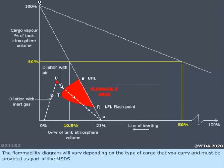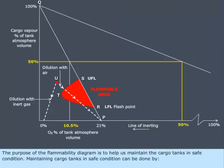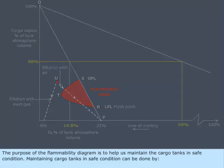The flammability diagram will vary depending on the type of cargo that you carry and must be provided as part of the MSDS. The purpose of the flammability diagram is to help us maintain the cargo tanks in safe condition.